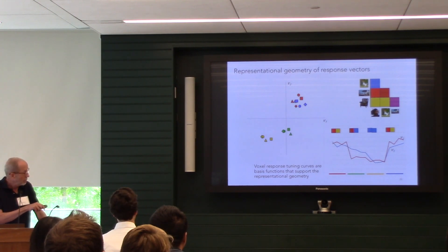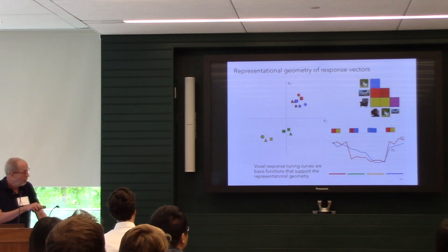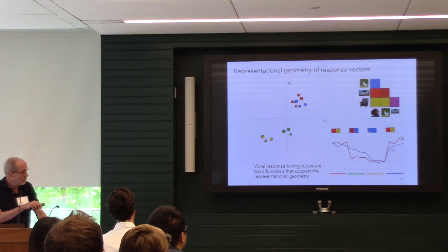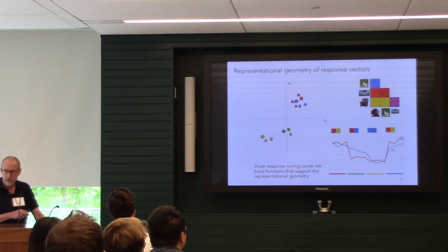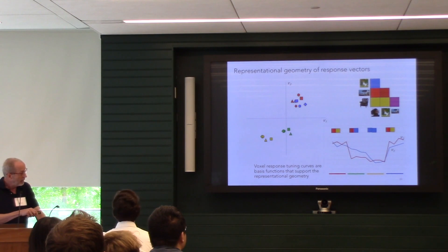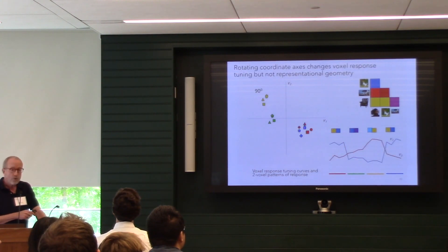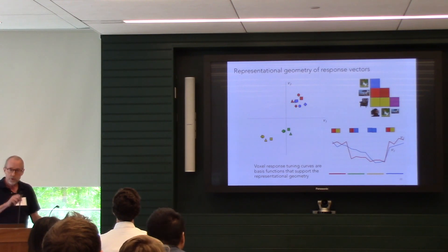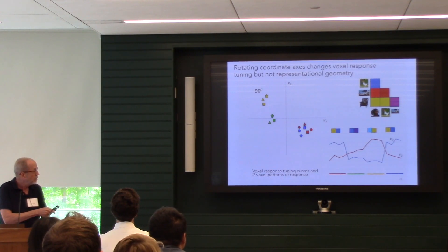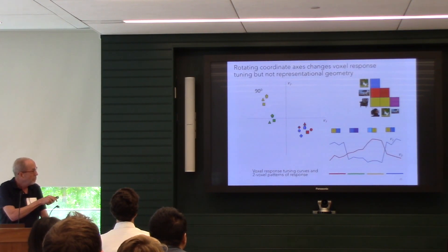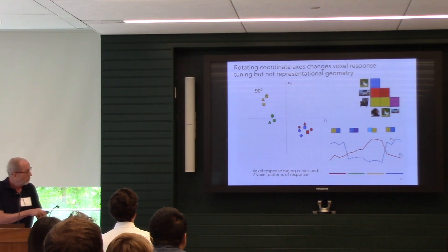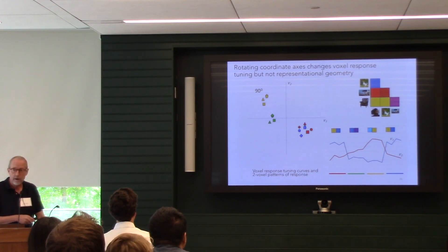These brain images and response tuning functions support this vector geometry. Now you can rotate this cloud of vectors — just a rigid rotation. This is a 90-degree rotation; the red and blue are now repositioned, but the distances are all still the same. There's been absolutely no change in the dissimilarity matrix, but the tuning functions and the patterns that support that have changed radically. You now have different tuning response curves and different patterns of activity across the two voxels.